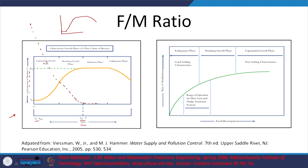Initially there is a lot of substrate in this pure culture with no inflow or outflow. Microbial concentration starts at x-naught, there is an acclimatization phase, then an exponential growth phase, then log growth with uniform growth characteristics, then declining growth, stationary, and endogenous phases.